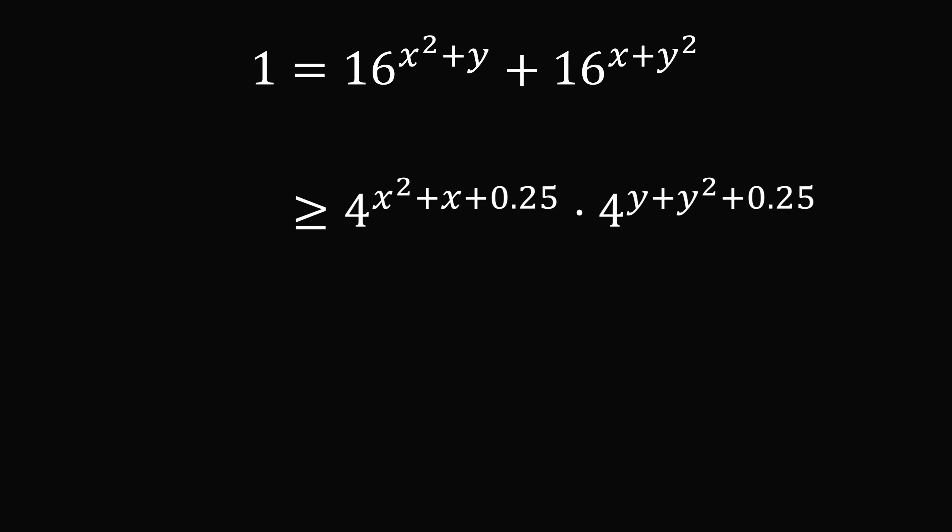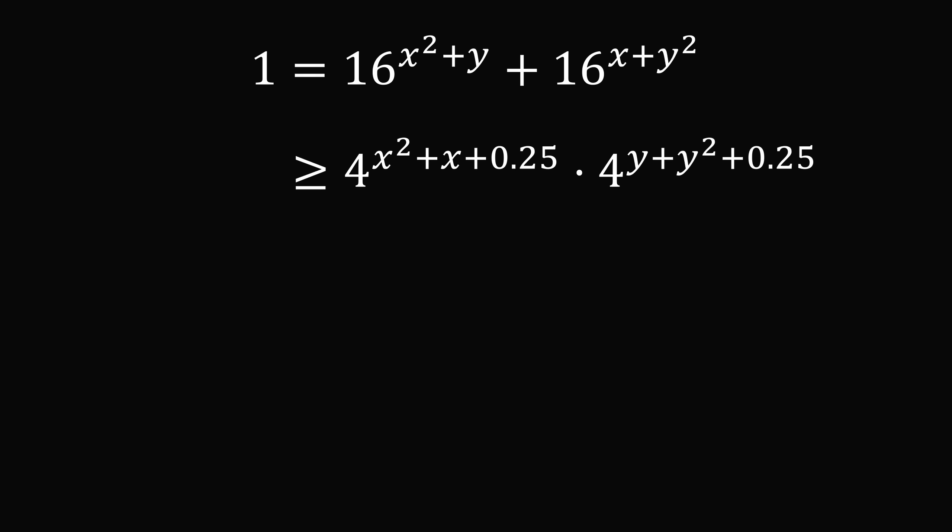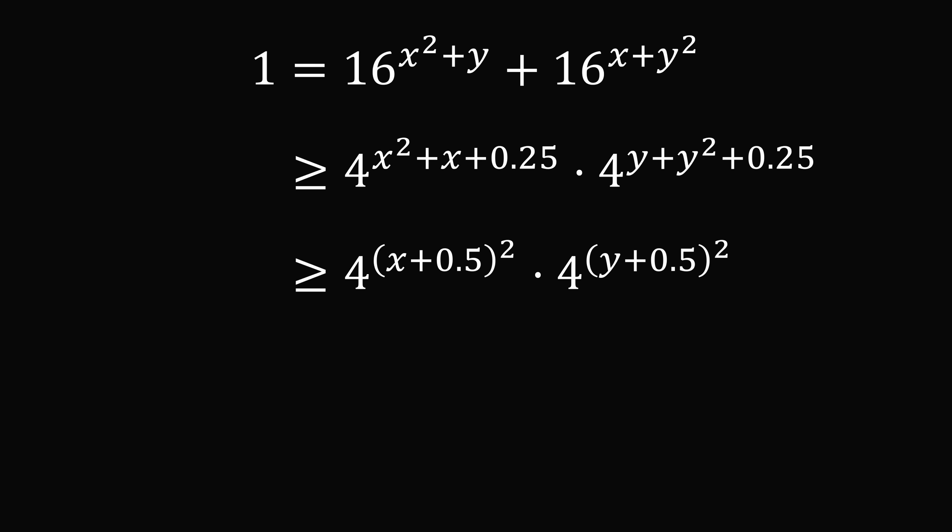This is equal to 4 to the power of x squared plus x plus 0.25, multiplied by 4 to the power of y plus y squared plus 0.25. We will factor each of these exponents. The first factors to be x plus 0.5, the quantity squared, and the second is y plus 0.5, the quantity squared.